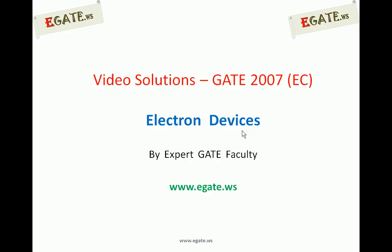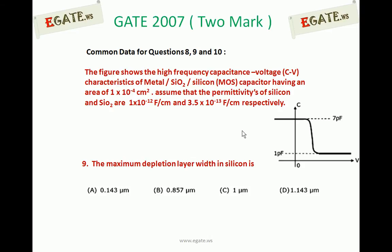Hello, we are discussing a 2007 ECE paper on the topic of electron devices. This question is common data for three sub-questions. Look at the diagram. The figure shows high frequency capacitance-voltage characteristics of a MOS capacitor with area of 1×10⁻⁴ cm² and given permittivities of silicon and silicon dioxide. We need to calculate the maximum depletion layer width in silicon.